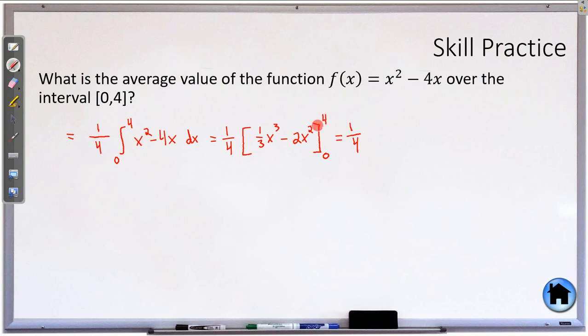So now we're going to plug in 4 and we're going to plug in 0. So plugging in 4: 4³ is 64 divided by 3. And then 4² is 16 times 2 is 32. Minus, now we're going to plug in 0. Here's the nice thing. Plug in 0, plug in 0, you get 0.